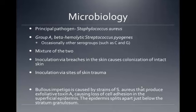The microbiology of impetigo: the principal pathogen is Staphylococcus aureus. Group A beta-hemolytic Streptococcus pyogenes is also a causative agent, but most commonly it is Staphylococcus aureus. Occasionally, other serogroups such as C and G of the beta-hemolytic strep can also cause it, or a mixture of the first two listed.